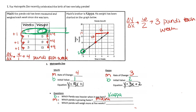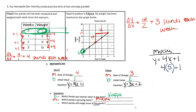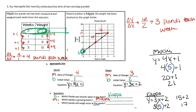The last question: which panda will weigh more at five weeks? For Mochi, we plug five into y equals four x plus one: four times five is 20, plus one is 21. For Kappa, we plug five into y equals three x plus two: three times five is 15, plus two is 17. So Mochi will be larger after five weeks at 21 pounds, compared to Kappa at 17 pounds.